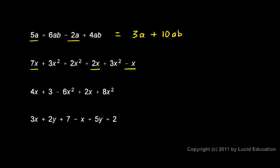And the negative x, that's also an x term. So I have 7x plus 2x, that's 9x minus x, gives me an 8x.